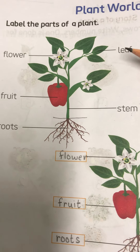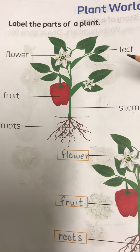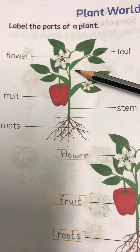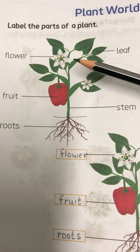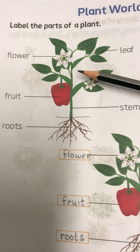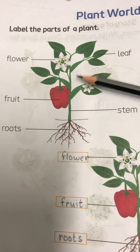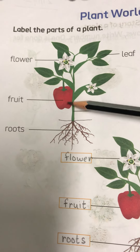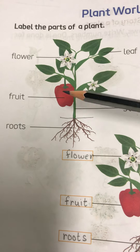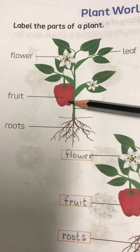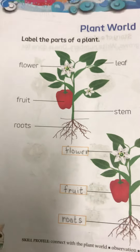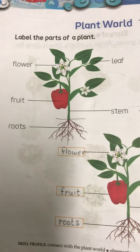Leaves grow on stem and branches and prepare food for the plant. Flowers are the beautiful part of the plant and produce seeds that can become a new plant. Many flowers grow into yummy fruits which we eat. This is all about the parts of the plant.